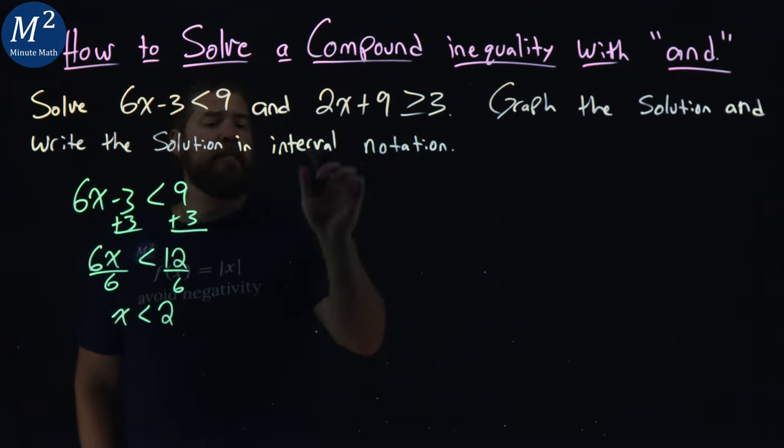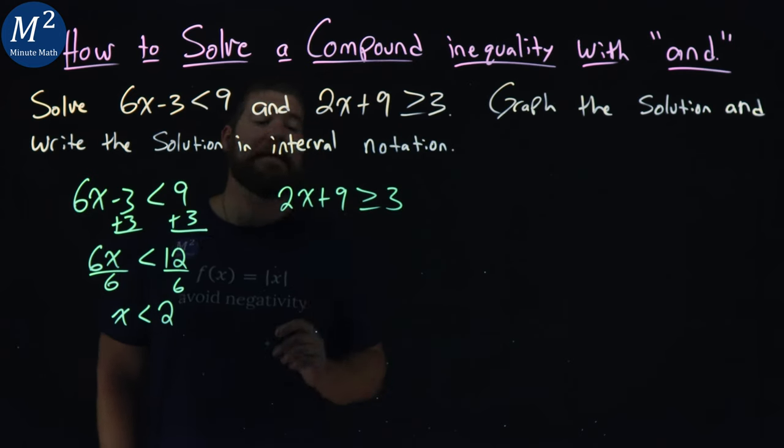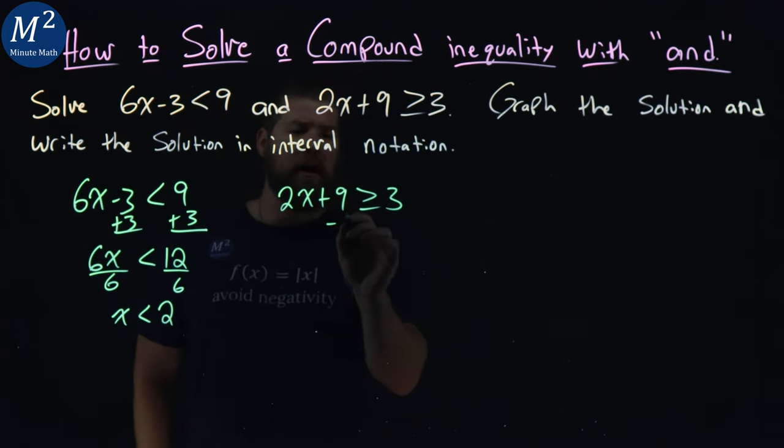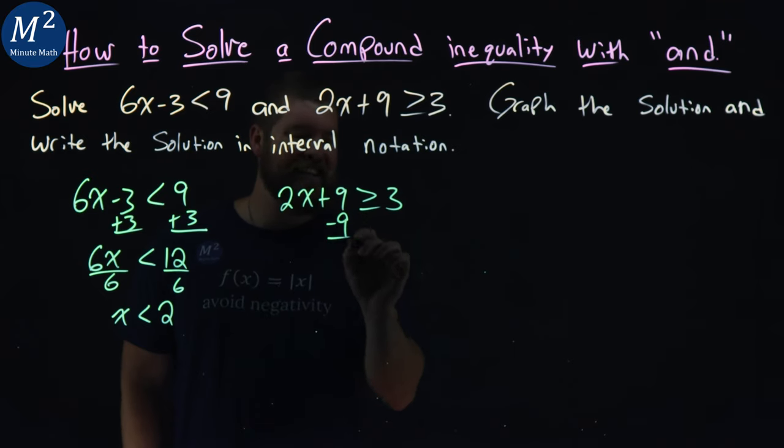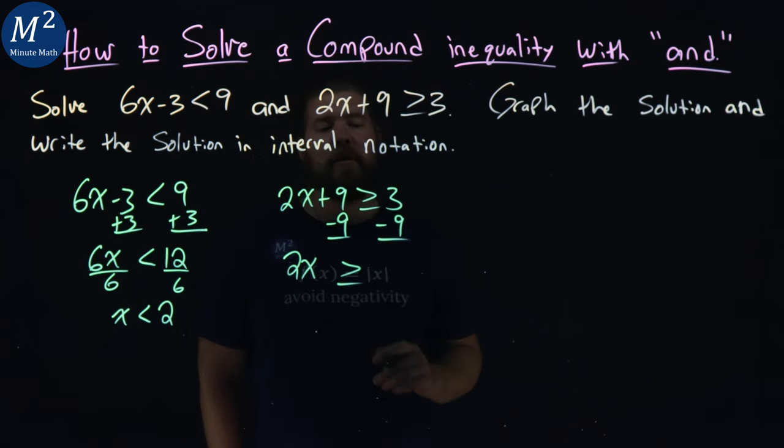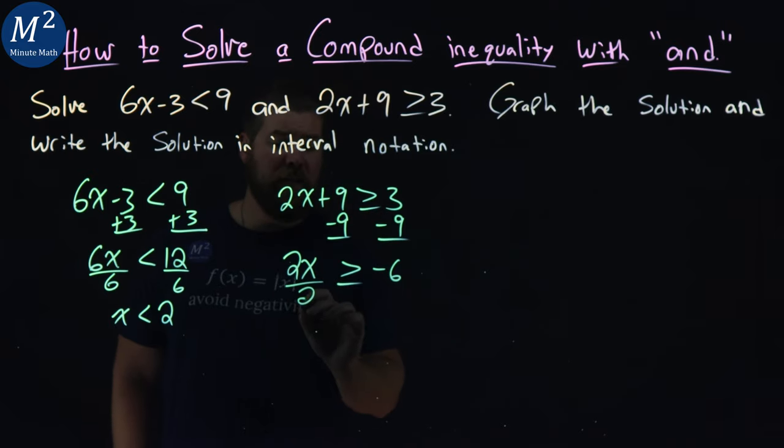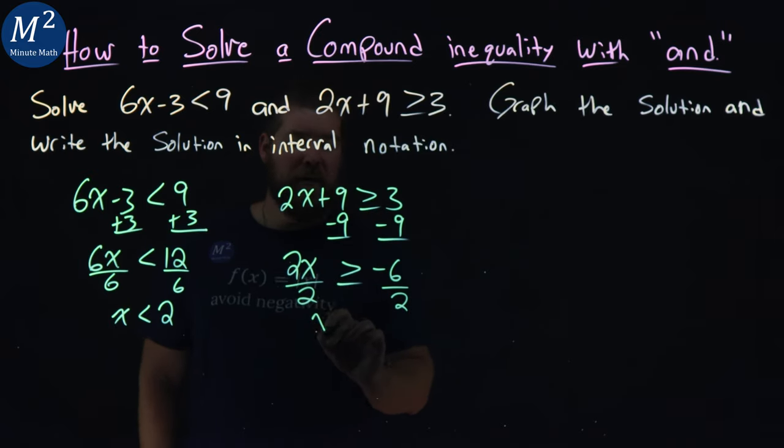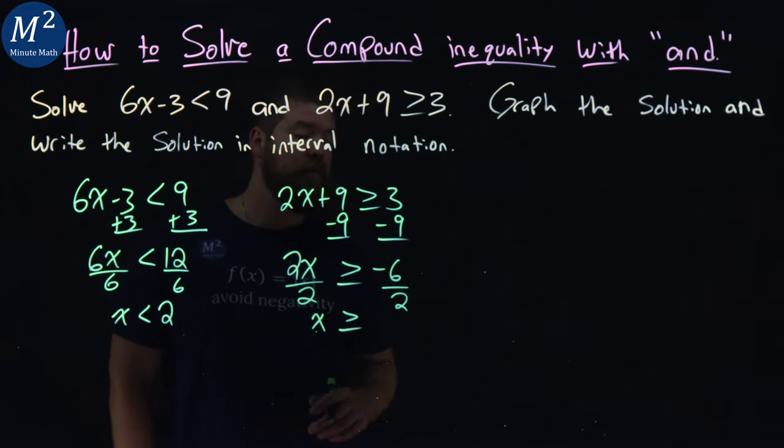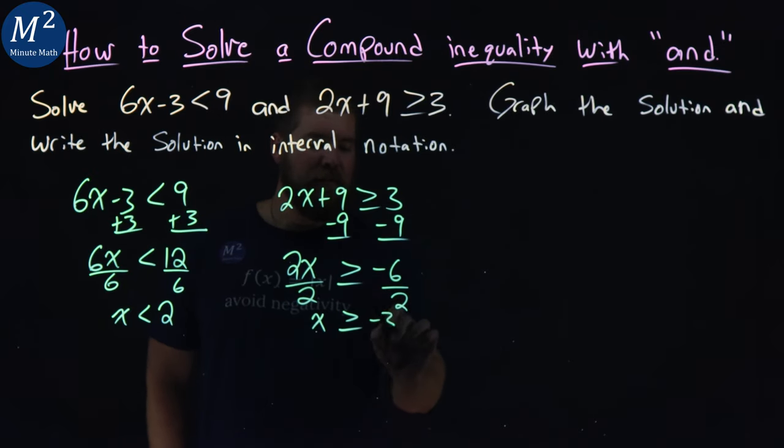Let's start with the second one now. We have 2x plus 9 is greater than or equal to 3. We're going to subtract 9 from both sides here. Same steps as always. 2x is greater than or equal to 3 minus 9, which is negative 6. From there, we divide both sides by 2. x is greater than or equal to negative 6 divided by 2, which is negative 3.